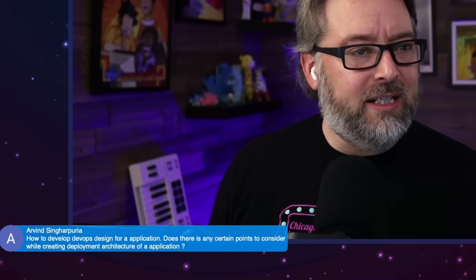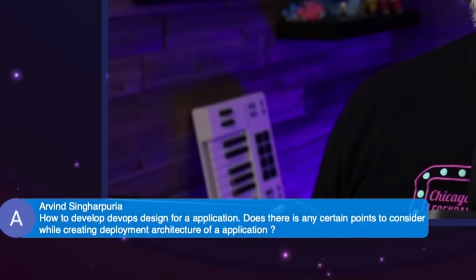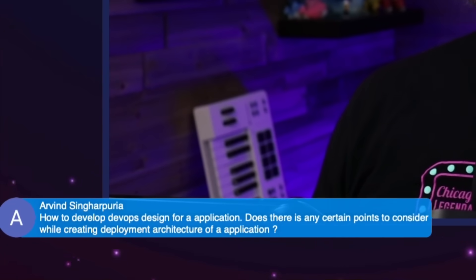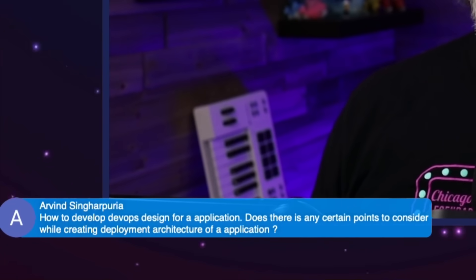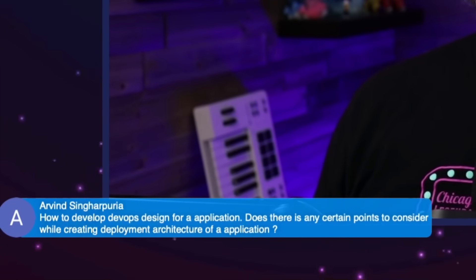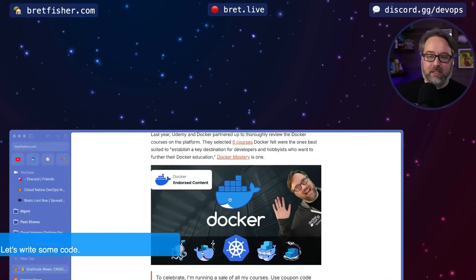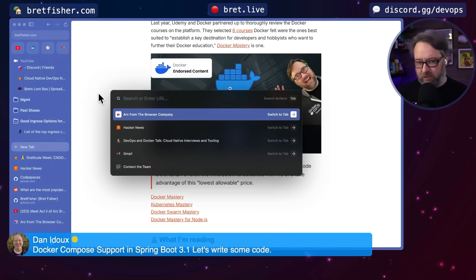This is a good question — how to develop a DevOps design for an application. Is there any certain points to consider when creating the deployment architecture of an application? These are some general guidelines. Let's not talk about tools because I don't know what tools you're using. There's a couple of things I look at. This is a great question because it goes to first principles of DevOps.